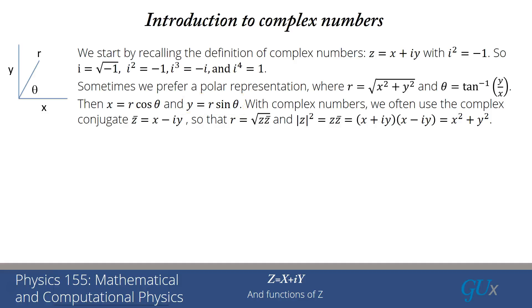With complex numbers, we often use complex notation. We introduce the complex conjugate, denoted by Z bar or sometimes Z star. Z bar is exactly the same as Z, except we change the sign of the imaginary part. So Z bar equals X minus IY if Z equals X plus IY.